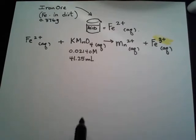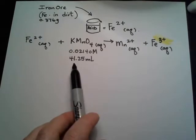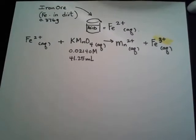And so we're told that in this titration, 41.25 milliliters of this permanganate ion oxidizing agent was needed. And we want to find out what was the mass percent iron in the original ore sample. So how do you go about this?